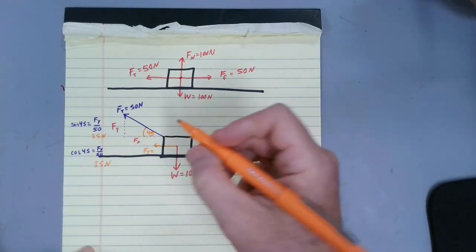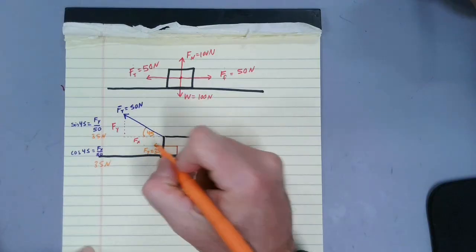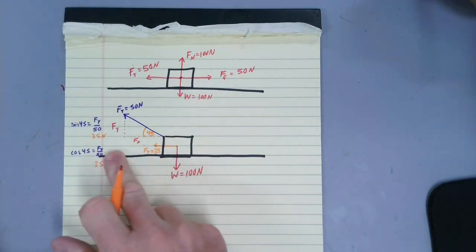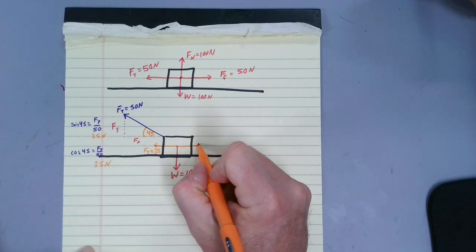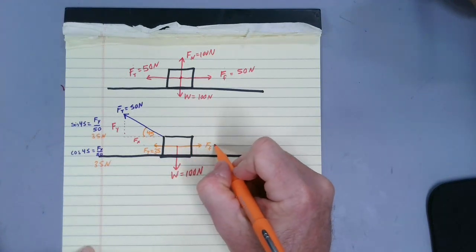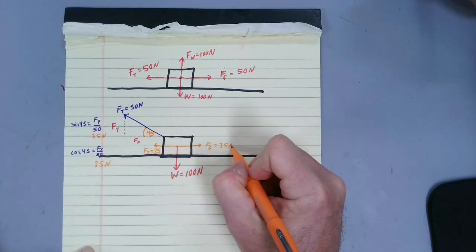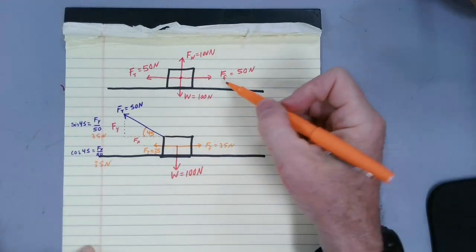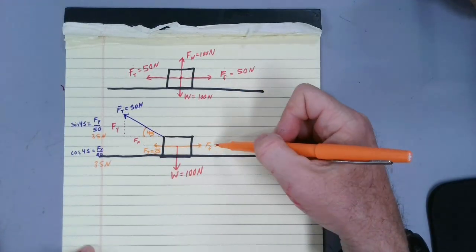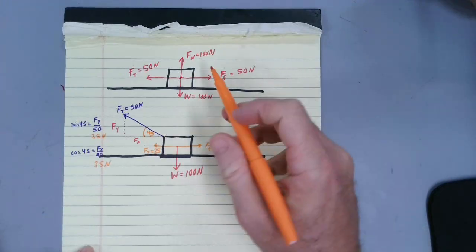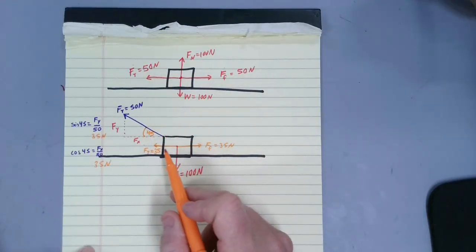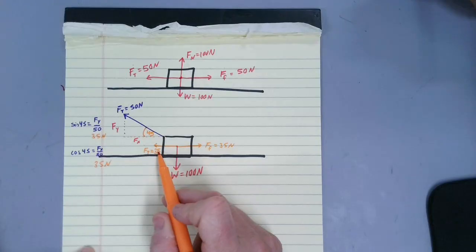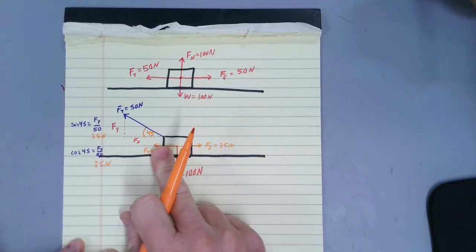So we have a tension force in the x direction of 35 newtons. The block still isn't moving horizontally, so the friction going the opposite way is now 35 newtons. Previously the friction was 50 newtons when the rope was horizontal — now it's only 35, because the tension in the x direction is only 35. The friction force has changed.